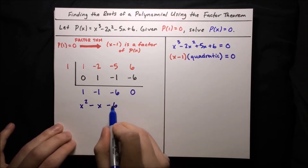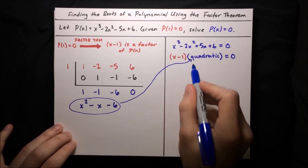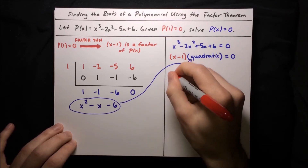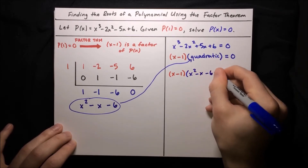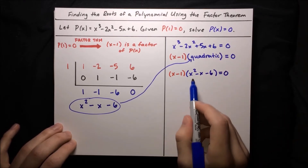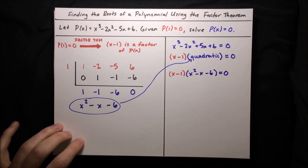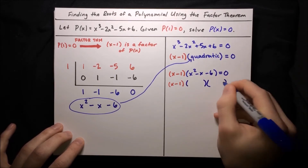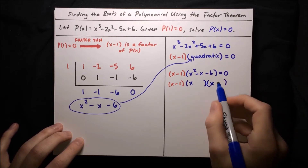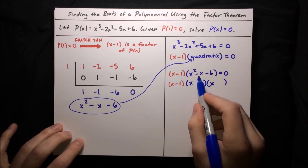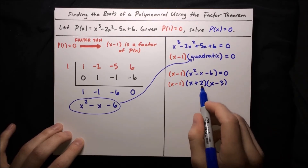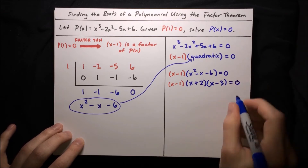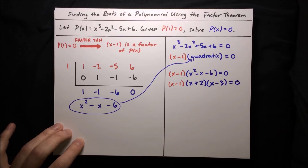So this is our quadratic that we're going to fill in. We write x minus 1 times the quadratic x squared minus x minus 6, equal to 0. Now let's continue factoring this quadratic. We write down x minus 1 first, and then factor x squared minus x minus 6. Negative 6 suggests factors of 2 and 3, and they have to sum to negative 1, so we'll use negative 3 and positive 2. Negative 3 plus 2 is negative 1, and 2 times negative 3 is negative 6. All checks out.